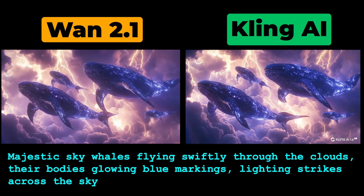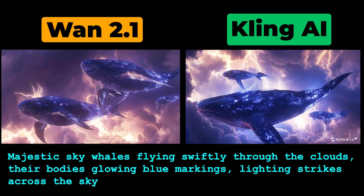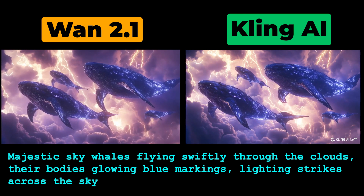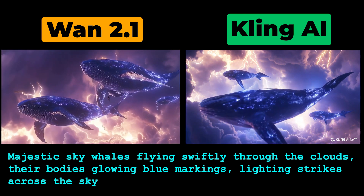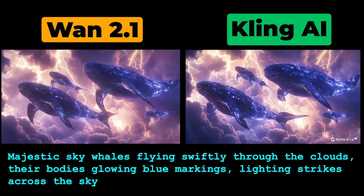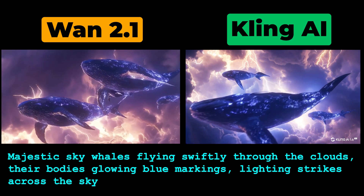I also tested mythic animations, but WAN 2.1 didn't perform as well as Kling. Neither fully followed the prompt, but at least Kling's motions were fluid and dynamic. Meanwhile, WAN's version still suffers from that classic Runway zoom-in flaw. You've seen that WAN 2.1 can handle human emotion and has decent motion flow, and it also performs well in animation.